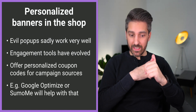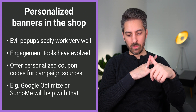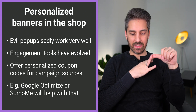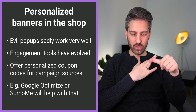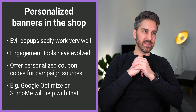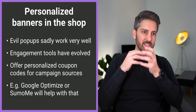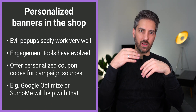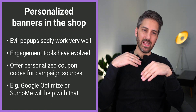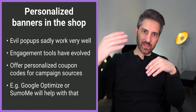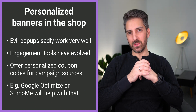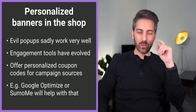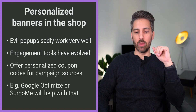We talked about engagement tools, and the thing I want to dig deep into is offering a personalized coupon code for your campaign sources. It is such an interesting experience when you click on an ad or have interacted with an influencer and you land on a website that actually takes into account what you have just been seeing — and we're going to use Google Optimize for that.